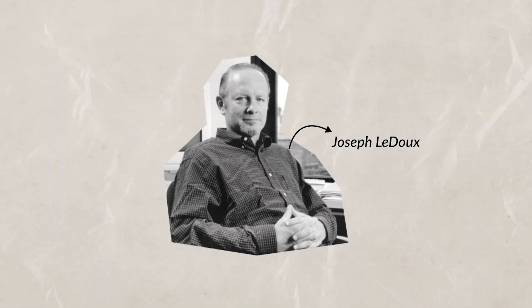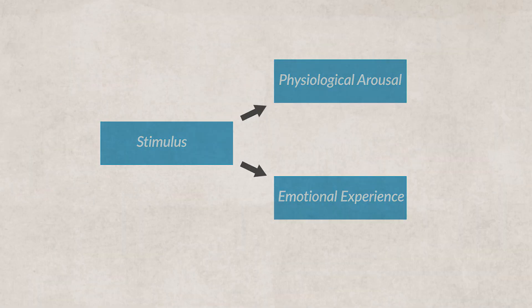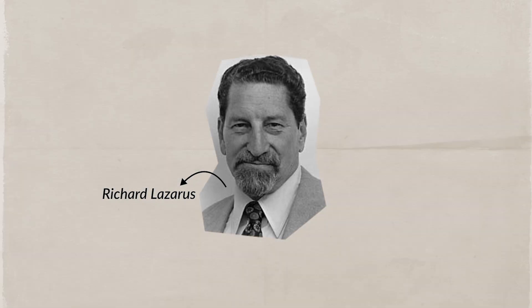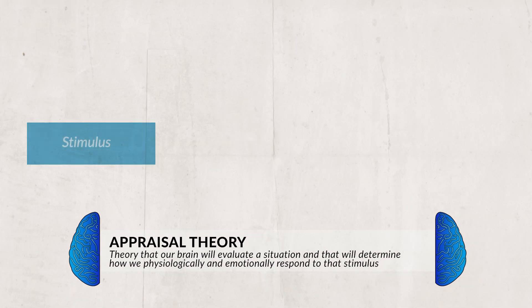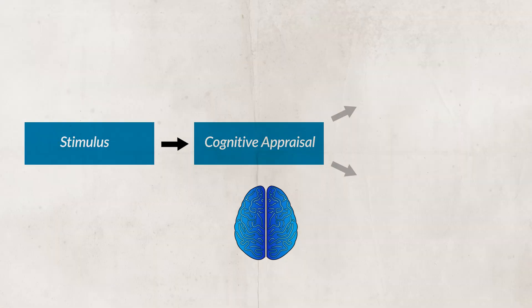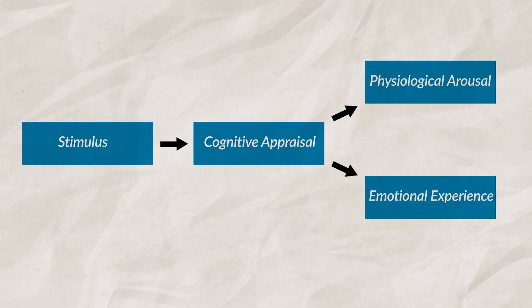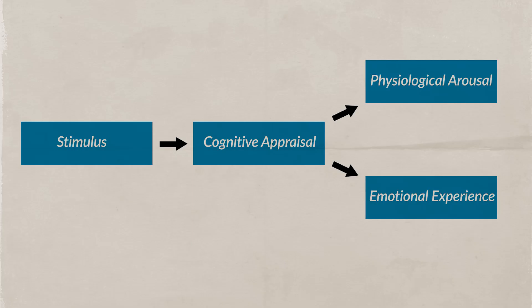Joseph LeDoux believed that our emotions can sometimes take a direct path to the amygdala and skip our cortex. This would cause us to have an immediate emotional response without us being immediately aware of what was happening. This idea was further researched by Richard Lazarus, who found that our brain is constantly processing information that we're not consciously aware of. Lazarus came up with the appraisal theory, which states that when we encounter a stimulus, an event, or an experience, we will appraise or assess the situation and conclude that the stimulus, experience, or event is either harmless or dangerous. This process can happen without us being immediately aware of it.